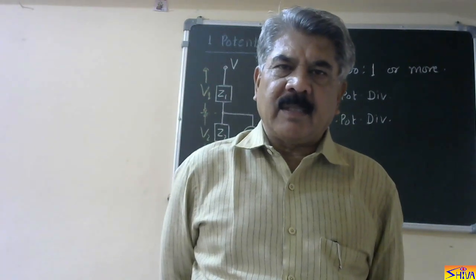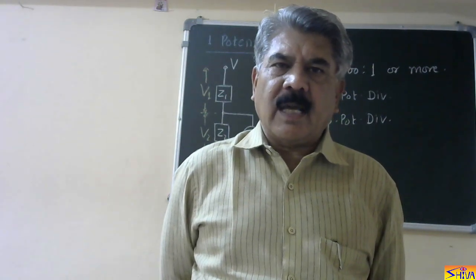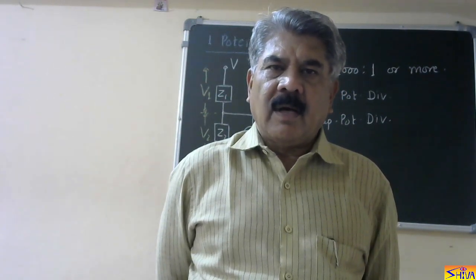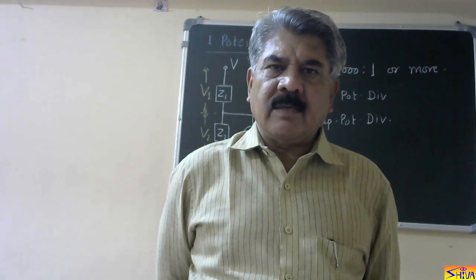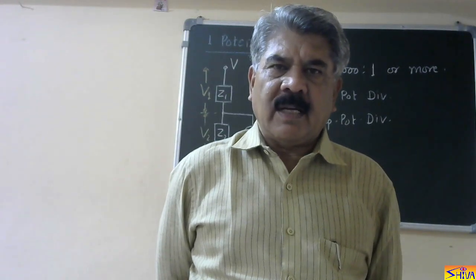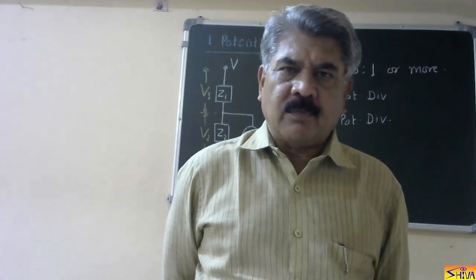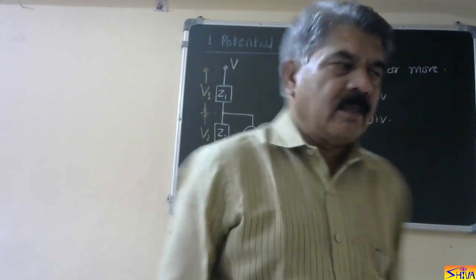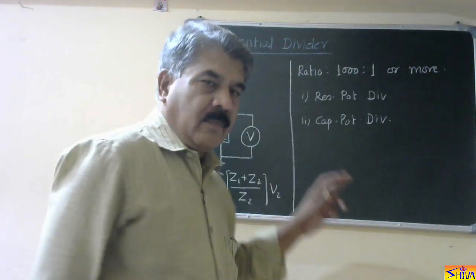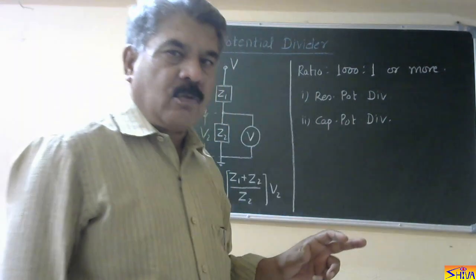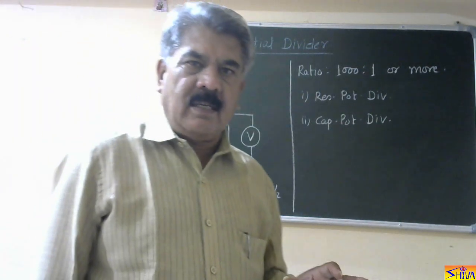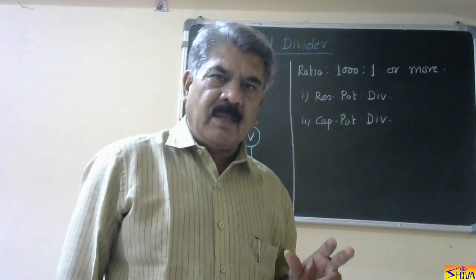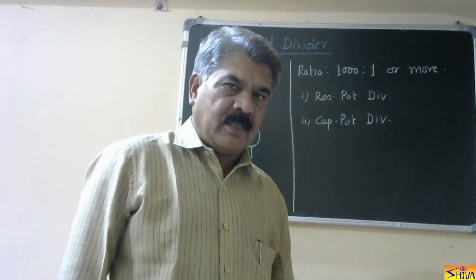Now I will explain the methods which can be used for measurement of high AC voltage, high DC voltage, as well as impulse voltage. The first method is the potential divider. This method is used for high AC voltage measurement, high DC voltage measurement, as well as impulse voltage measurement.